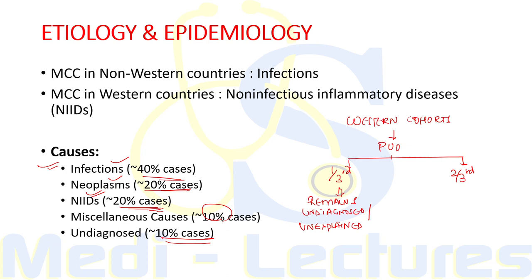An important point: among western cohorts, almost one third of PUO cases remain undiagnosed or unexplained — a much higher fraction compared to 60 years ago. This is because in the current scenario, a diagnosis is usually established within 3 weeks thanks to better diagnostic techniques like CT, MRI, and PET-CT. Therefore, only the most difficult-to-diagnose cases continue to meet the PUO criteria, and out of these a larger fraction remains undiagnosed.